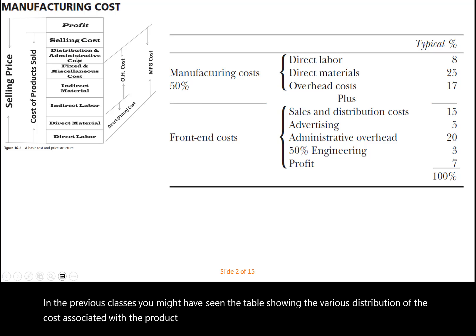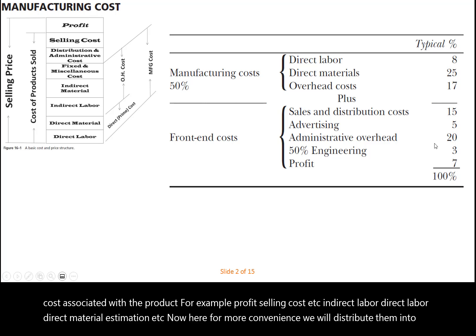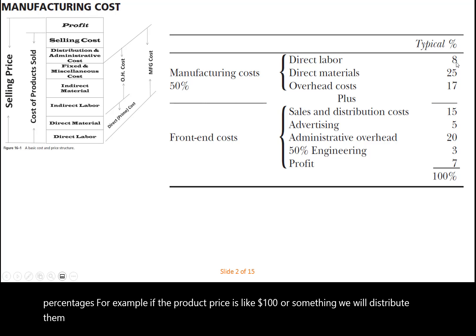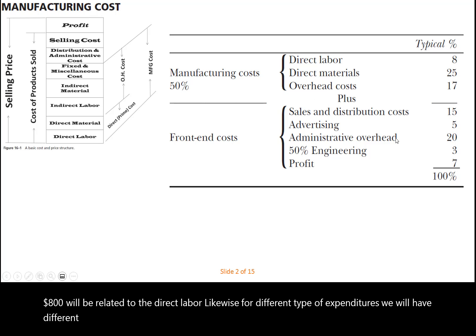The cost components include profit, selling cost, indirect labor, direct labor, direct material estimation, and more. For convenience, we will distribute them into percentages. For example, if the product price is $100, then 8% which means $8 will be related to direct labor. Likewise, for different types of expenditures we will have different proportions in terms of percentages, making it much easier to deal with the numbers.